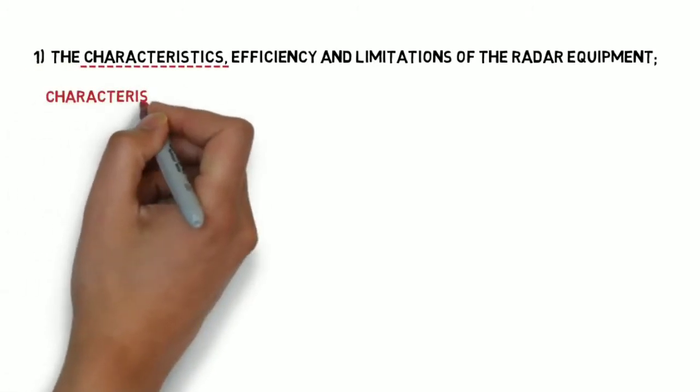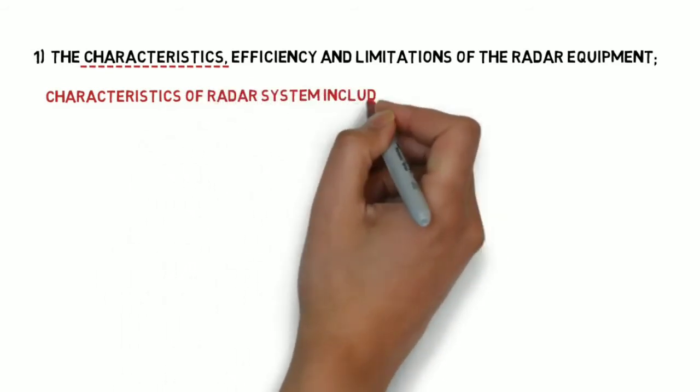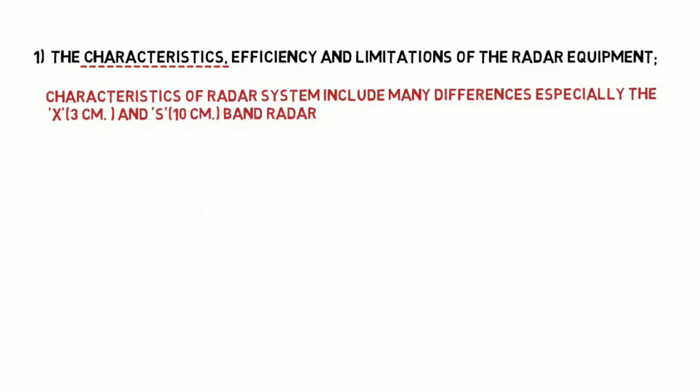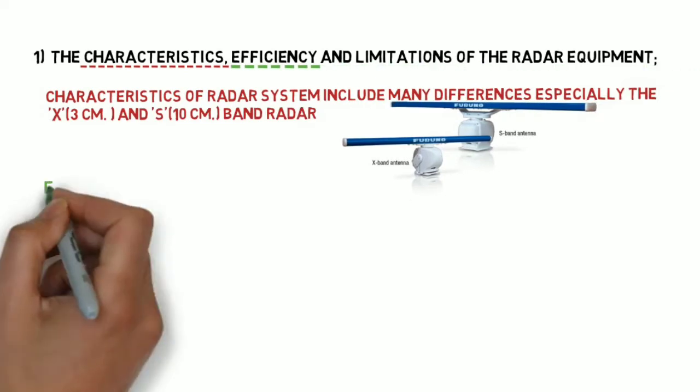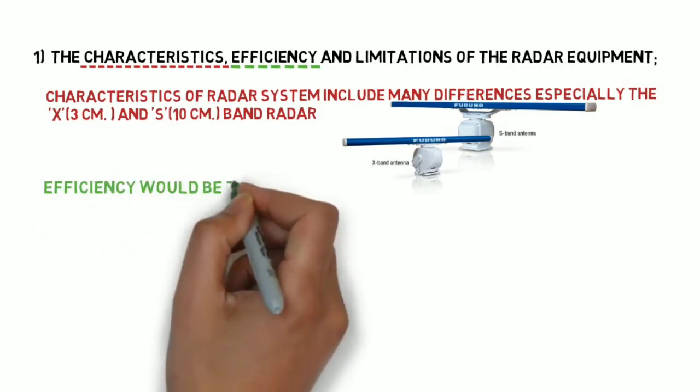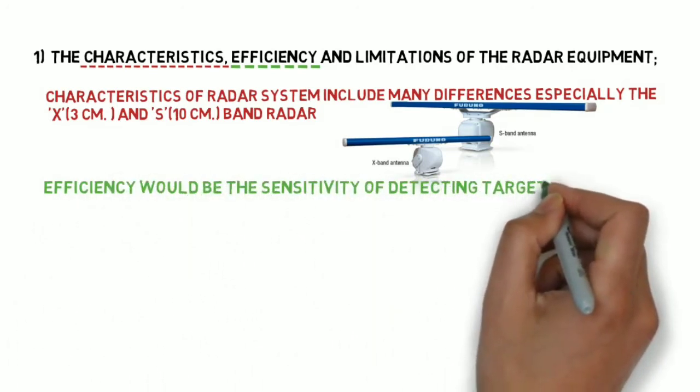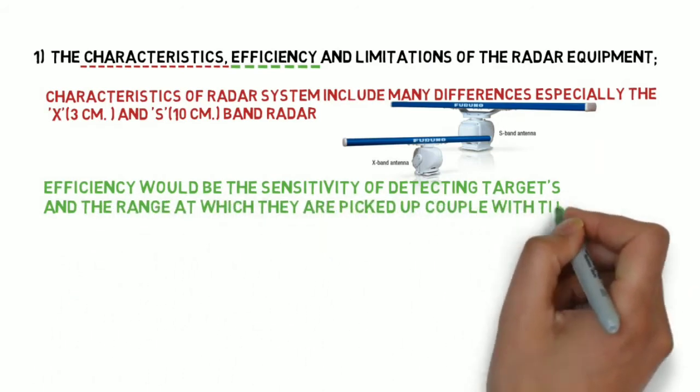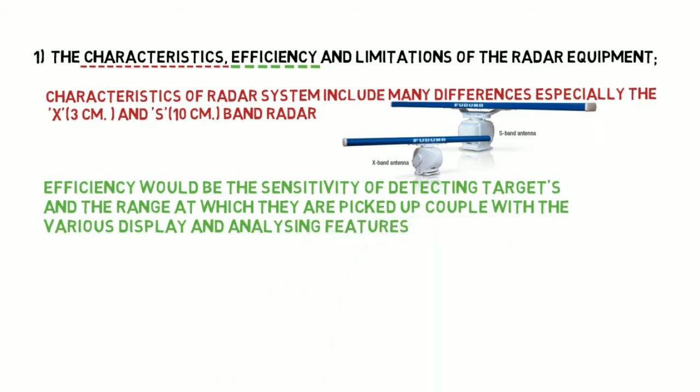Point 1: The characteristics, efficiency, and limitations of the radar equipment. The characteristics of a radar system include many differences, especially the X-band (3 cm) and S-band (10 cm) radar. Efficiencies would be the sensitivity of detecting the targets and the range at which they are picked up, coupled with the various display and analyzing features.